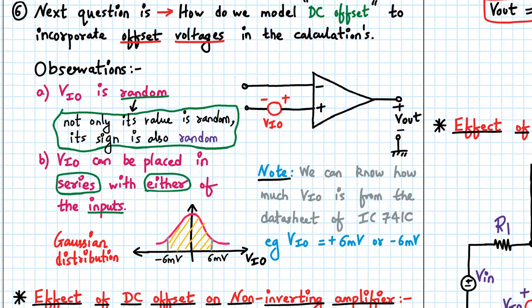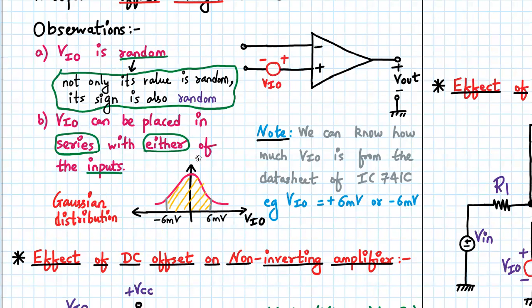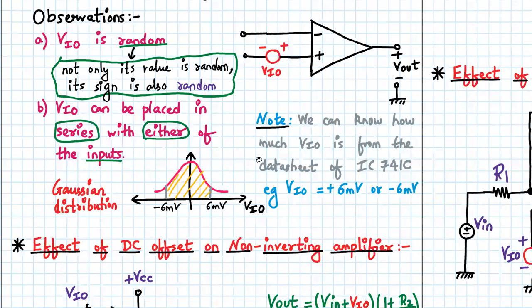Normally, when we talk about randomness, it can be represented in terms of Gaussian distribution. We can know how much VIO is from the datasheet of IC 741, and its value is 6 millivolts or -6 millivolts. Let us check that in one of the PDFs.